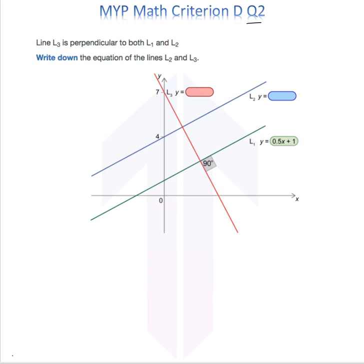We have three lines given here. The line L1 equation is y equals 0.5x plus 1. So what is the equation of line L2?